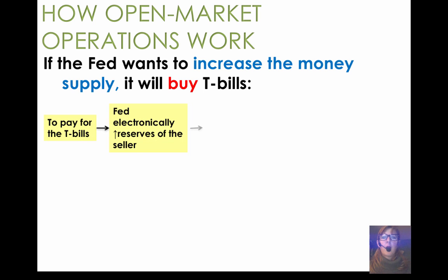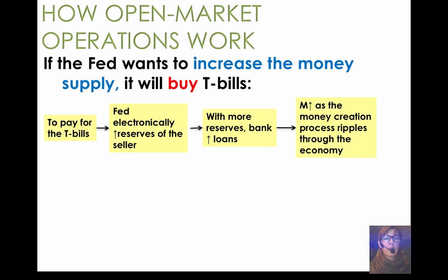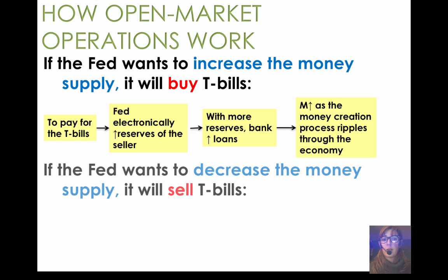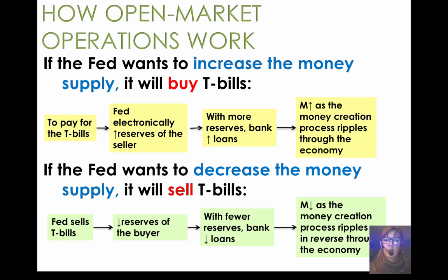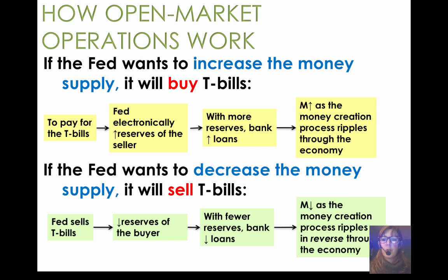Here's the causation chain. If the Fed wants to increase the money supply, it buys Treasury bonds or Treasury bills, reserves increase for the bank, banks loan out more, and money supply increases. On the flip side, if they want to decrease the money supply, they sell T-bills, reserves in the banking system decline, fewer new loans are made — some loans are even called back in — and the money multiplier reduces total money supply.